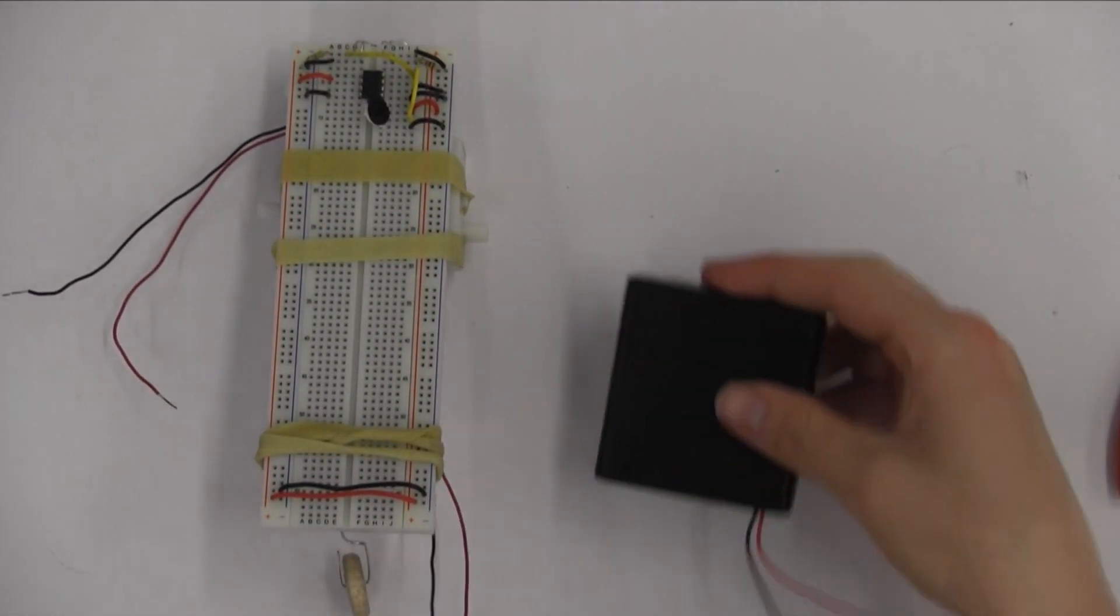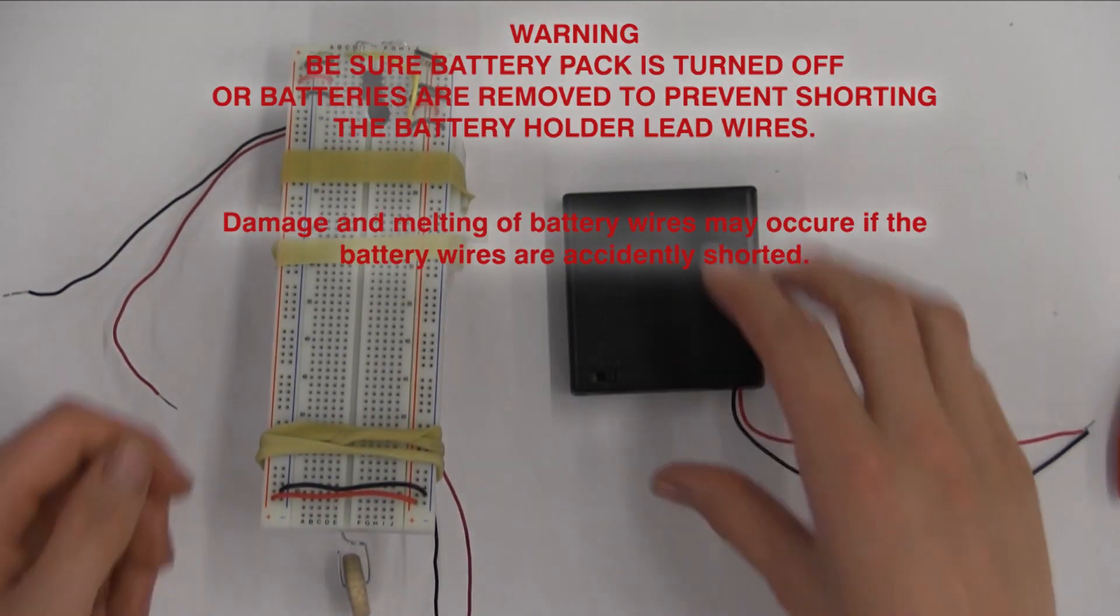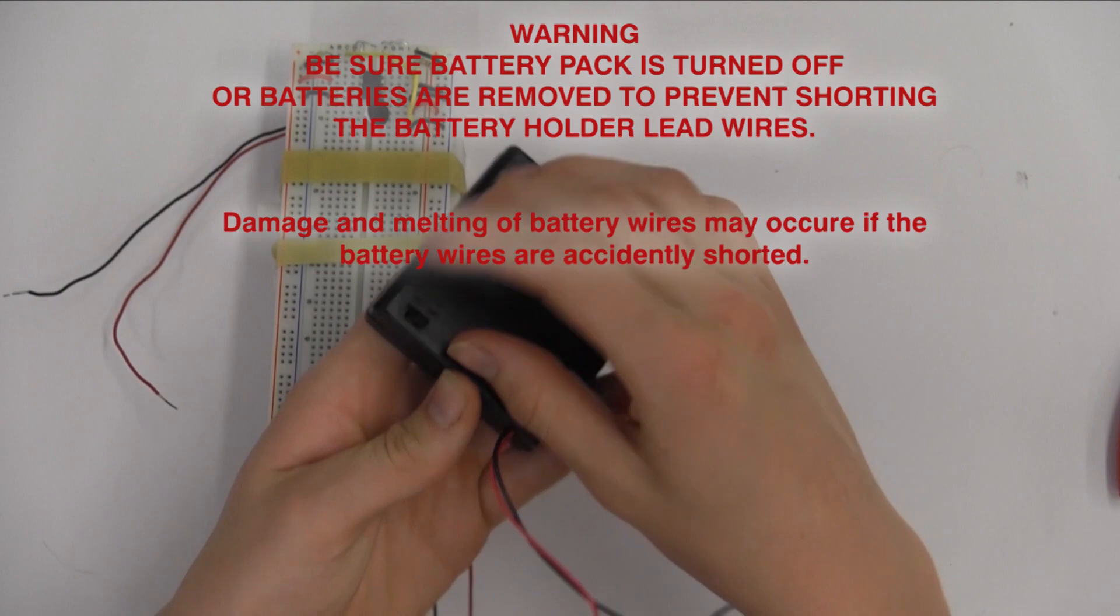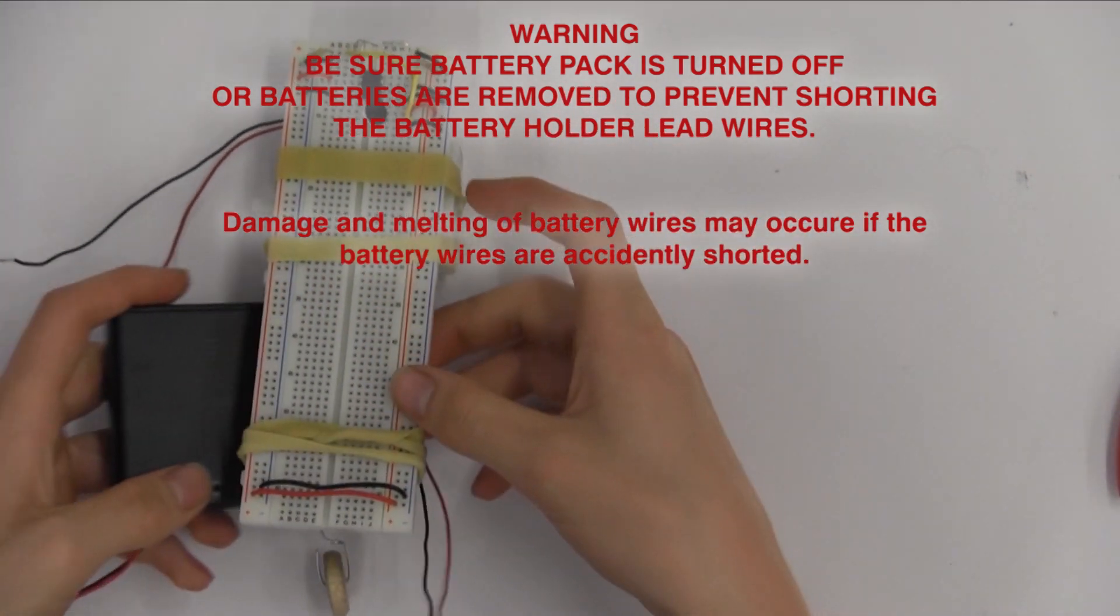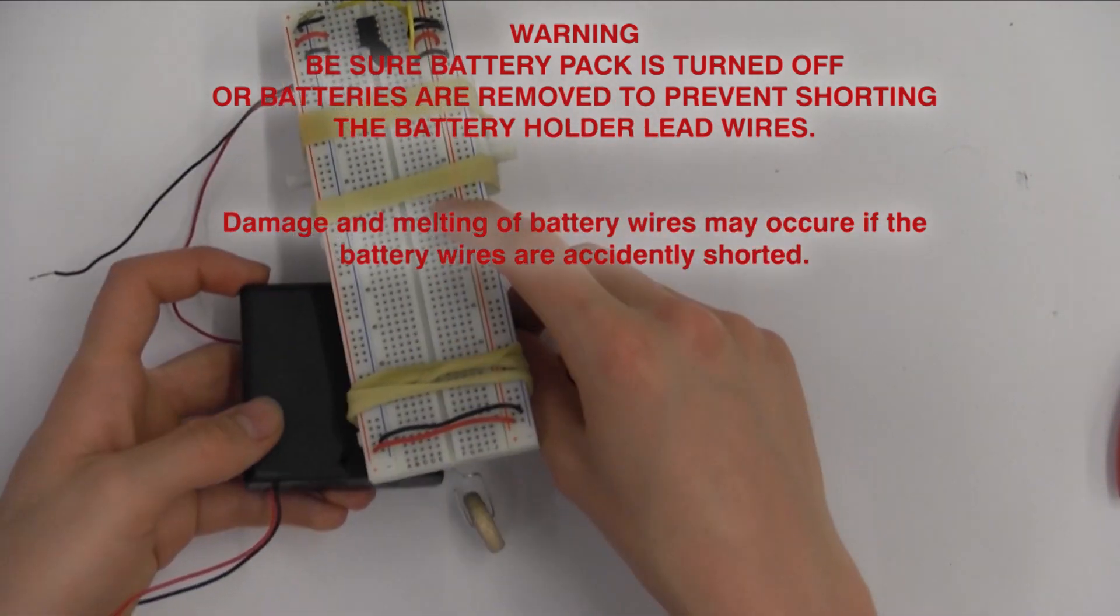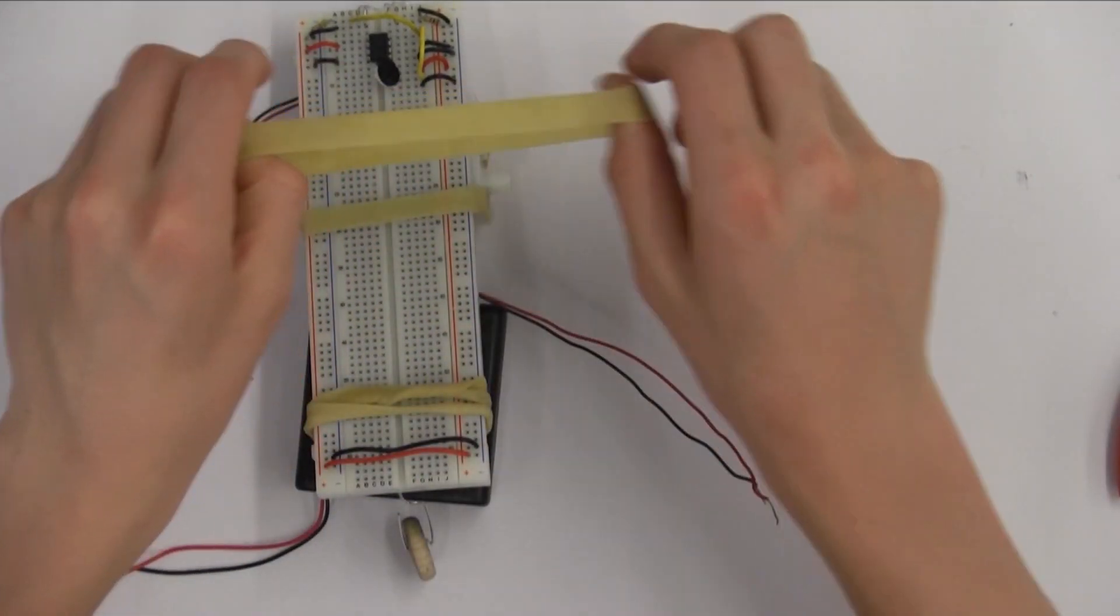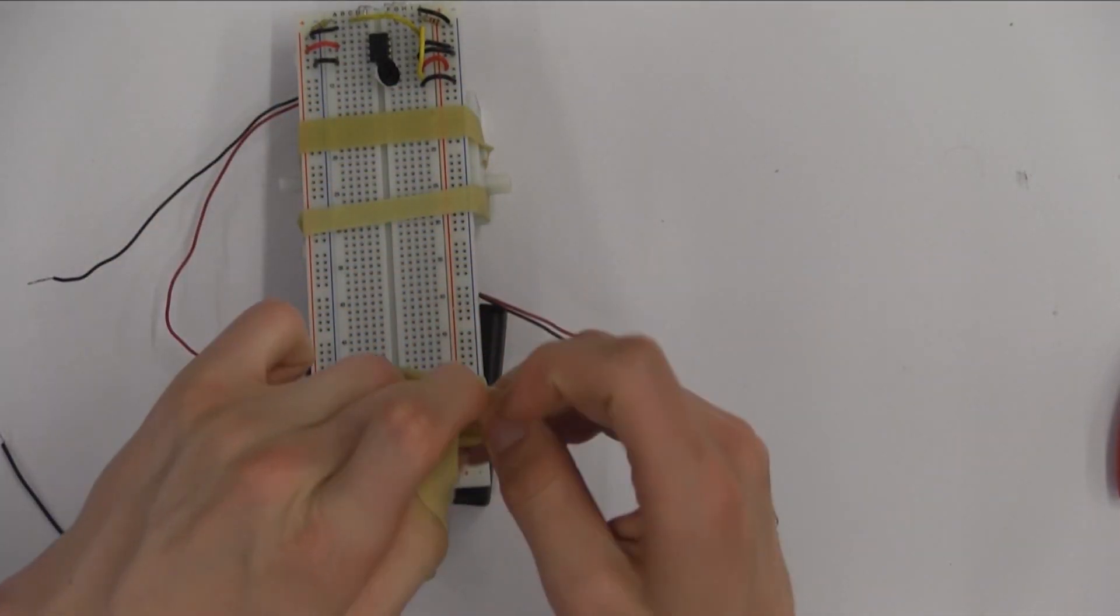Now grab your battery holder and a rubber band. There is an on and off switch on the battery holder. Make sure this is facing downwards so that you have access to it once the robot is fully assembled. Carefully mount your battery holder, avoiding any unnecessary paperclip.